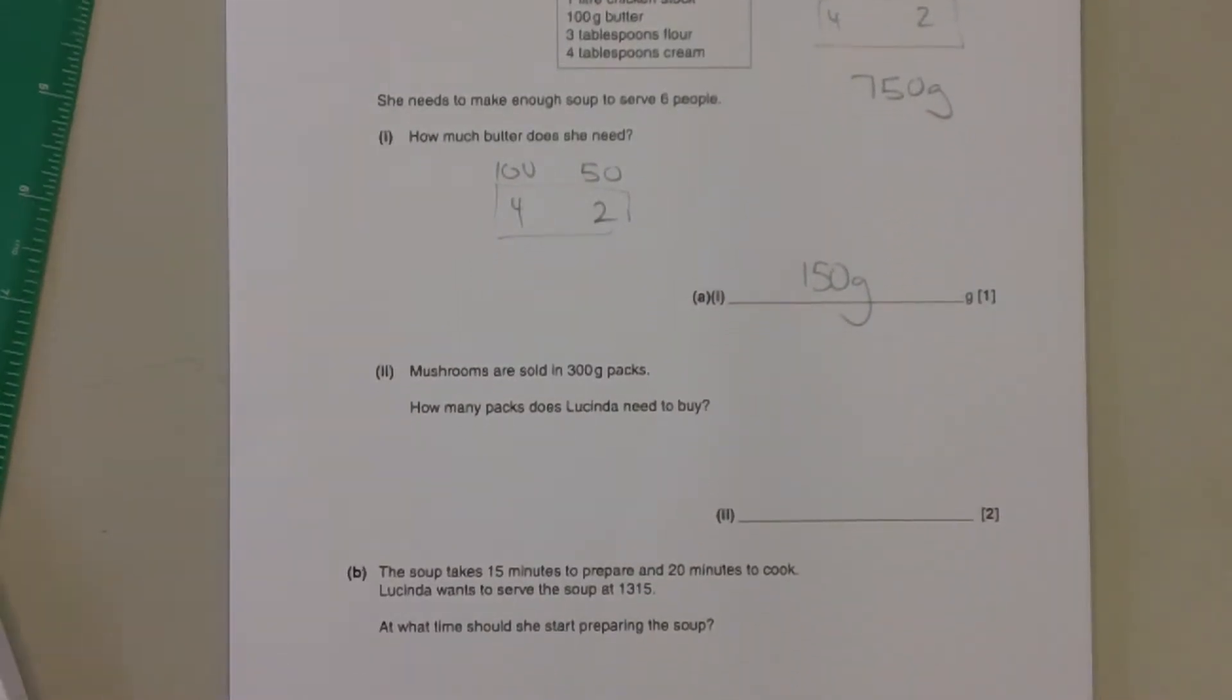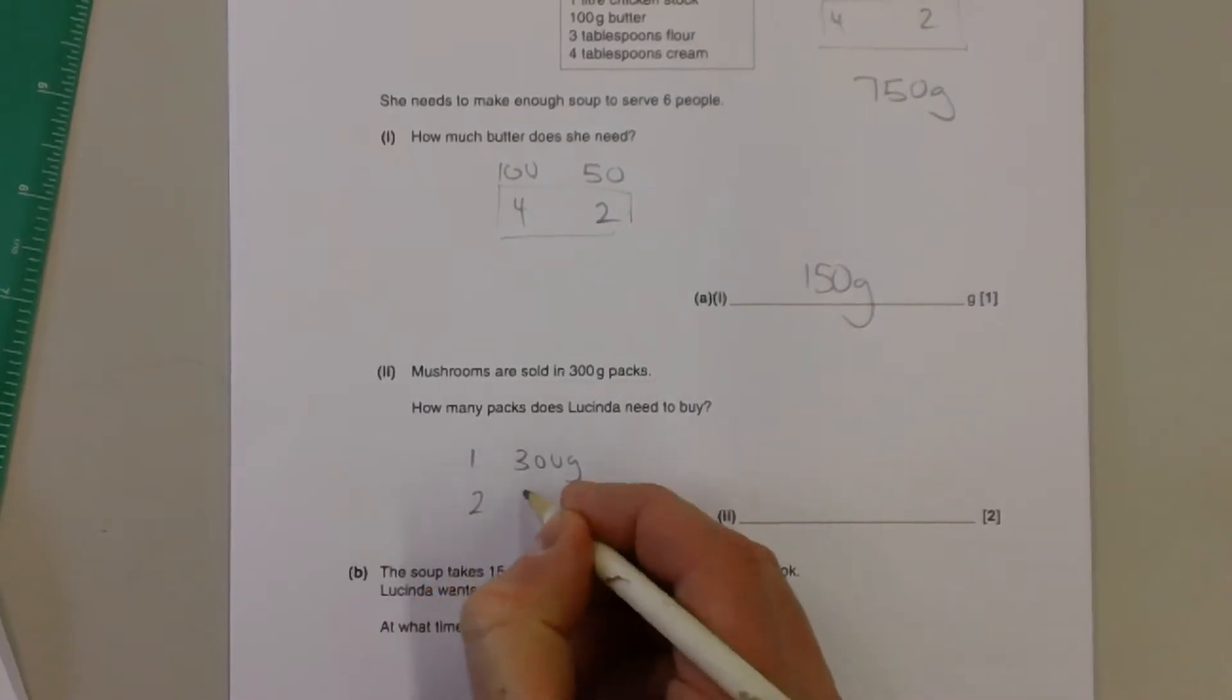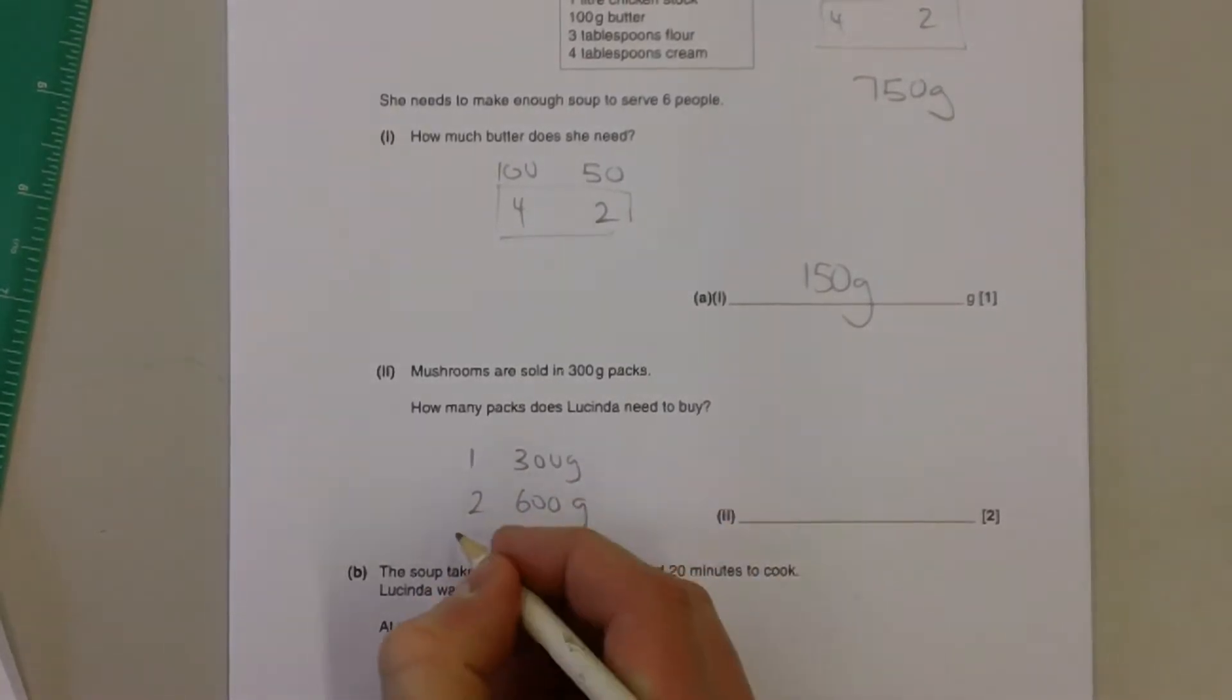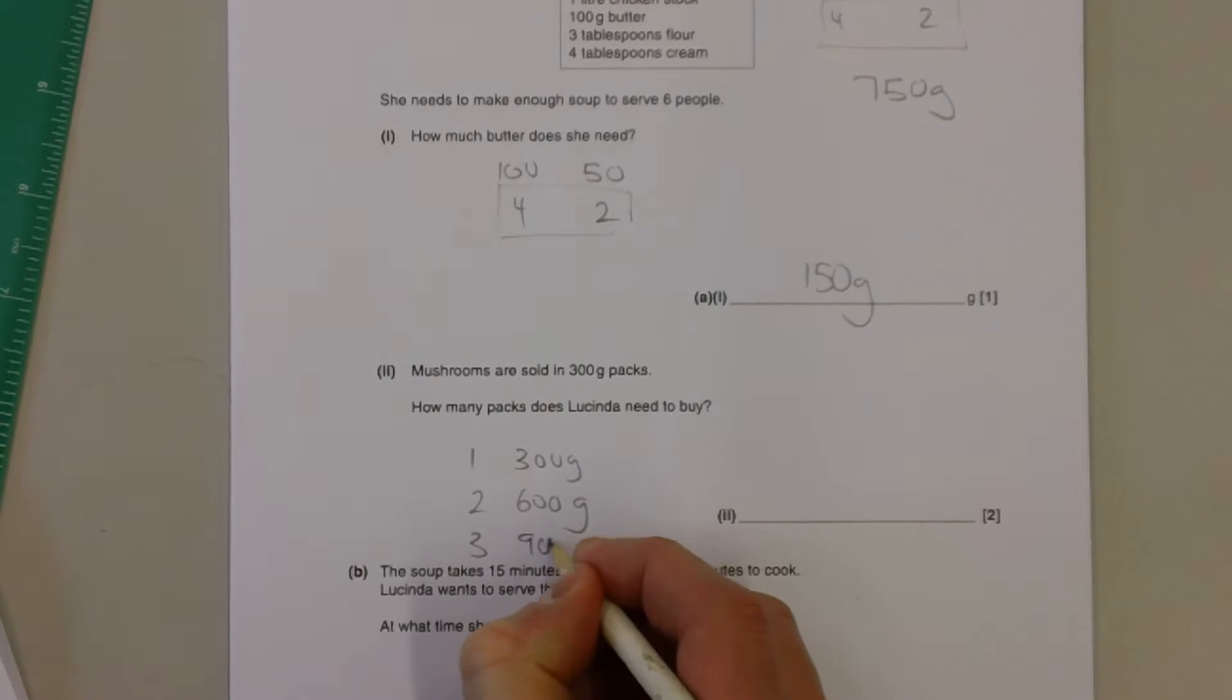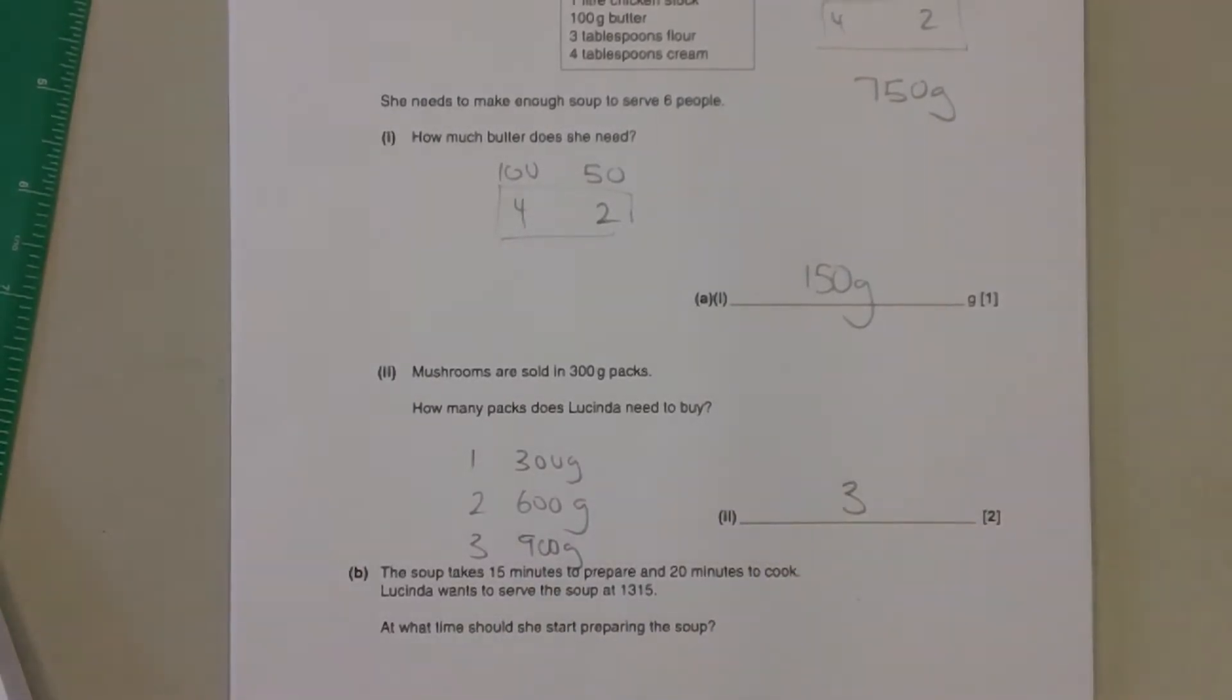If they're sold in 300 gram packs, then one pack is 300 grams, two packs would be 600 grams which is not enough. Three packs is going to be 900 grams which is more than she needs, but she's going to have to get the three and have some leftover.